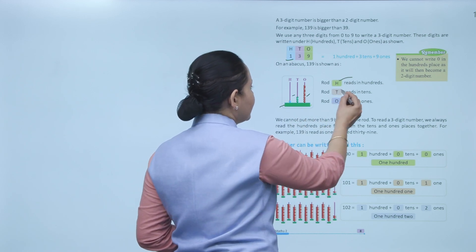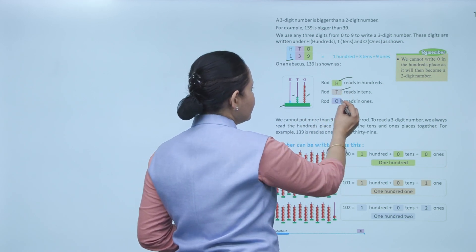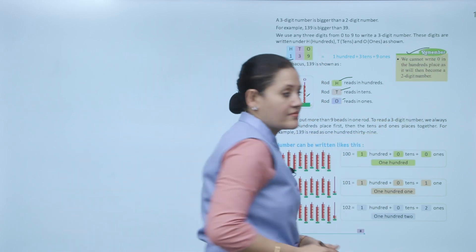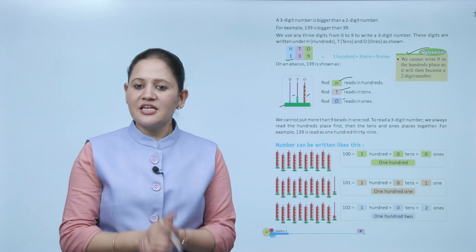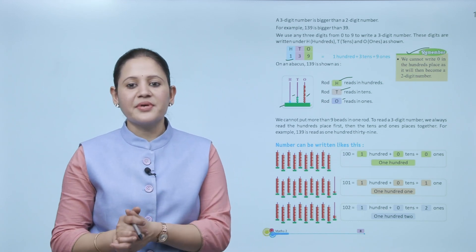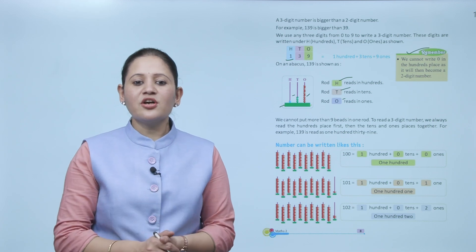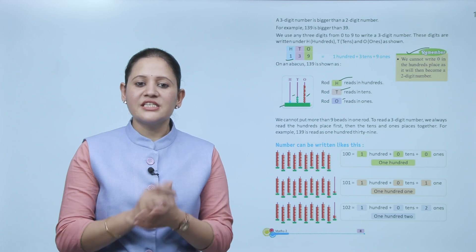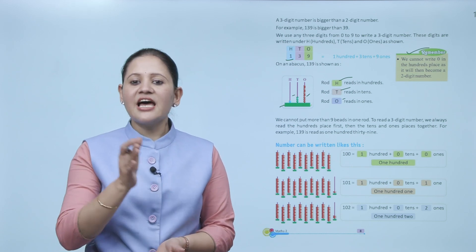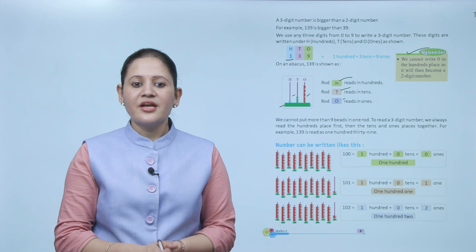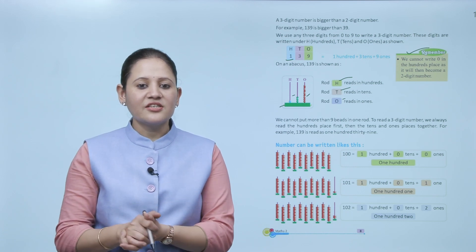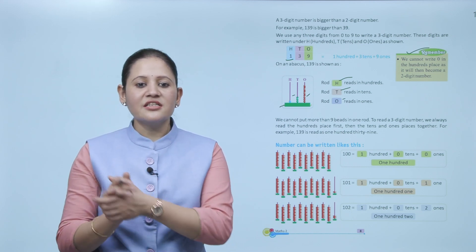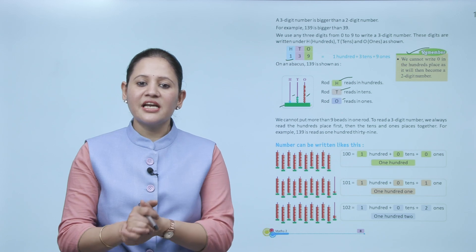This rod is a three-digit number — H represents hundreds, T represents tens, and this represents ones. Remember: we cannot write zero in the hundreds place, as it will then become a two-digit number. We cannot put more than nine beads in one rod. To read a three-digit number, we always read the hundreds place first, then tens and ones place together. For example, 139 — read as 100 and then 39 together, so one hundred thirty-nine.